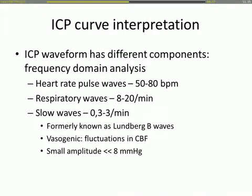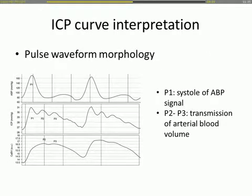Let's discuss ICP curve interpretation, which Giuseppe touched on briefly. The ICP waveform has different components separable by frequency domain analysis: heart rate waves, respiratory waves, and slow waves, formerly known as Lundberg B waves. When they get bigger, you enter a pathological situation. The first peak is the systolic blood pressure signal, while the other two reflect transmission of arterial blood volume in the brain. When this peak becomes higher, it is a sign of pathology.